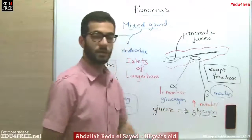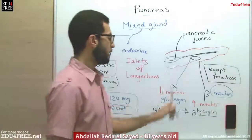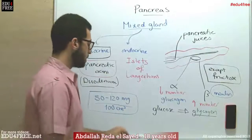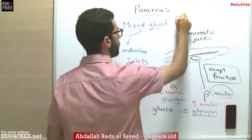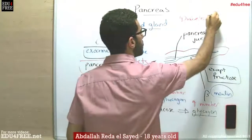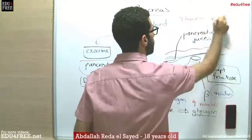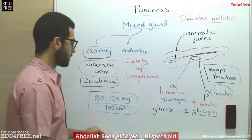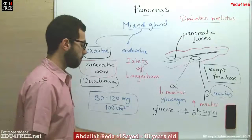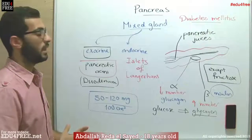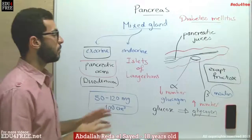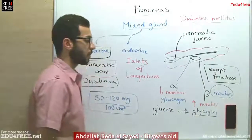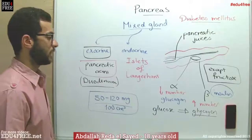A decrease in the levels of insulin will decrease the conversion of glucose into glycogen, and accordingly glucose will remain in the blood. This case is called diabetes mellitus, where the patient suffers from an increased level of glucose in the blood. This explains the increased rates of glucose in urine, rapid urination, and increased thirst. Diabetes mellitus results from decreased production of insulin or the complete stoppage of insulin production.